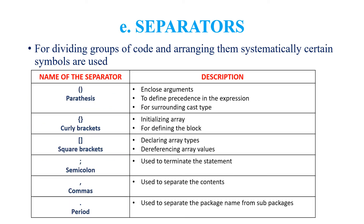The last type under token is separators. Separators are nothing but symbols used for dividing groups of code and arranging them systematically. The separators used are parenthesis, curly brackets, square brackets, semicolon, commas and period. Parenthesis are used to enclose arguments; curly brackets are used for initializing an array and defining a block; square brackets are used for declaring an array; semicolon is used to terminate a statement; commas are used to separate contents; and period is used to separate the package name from sub-packages.